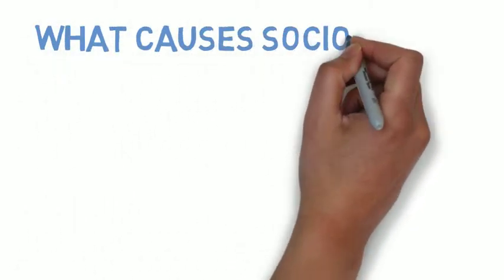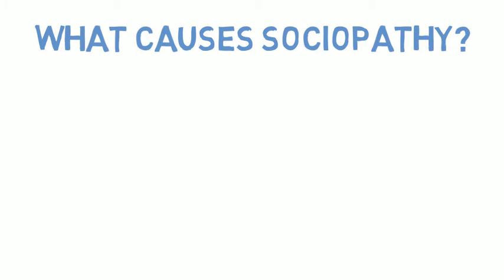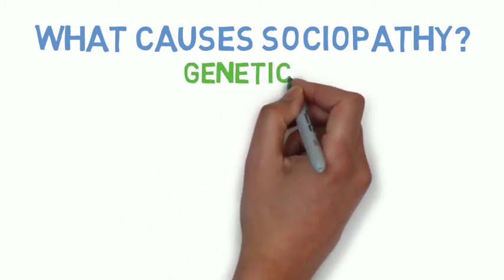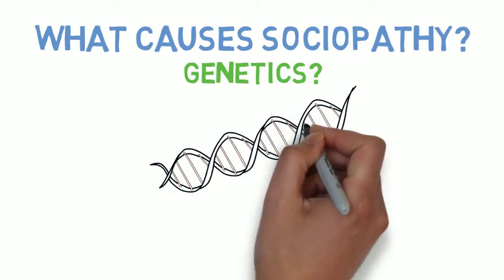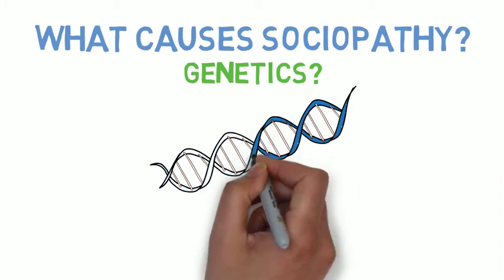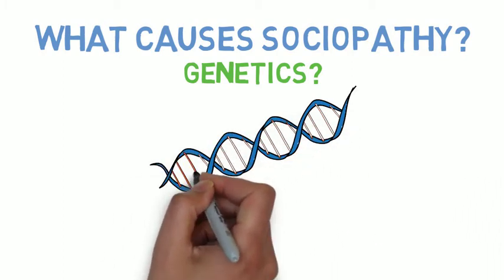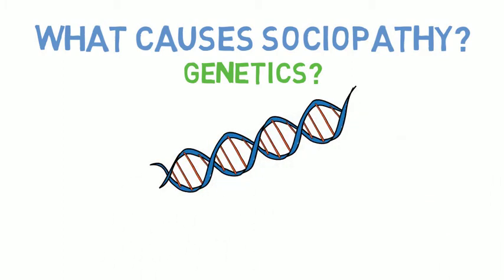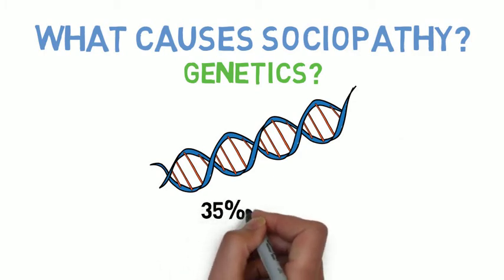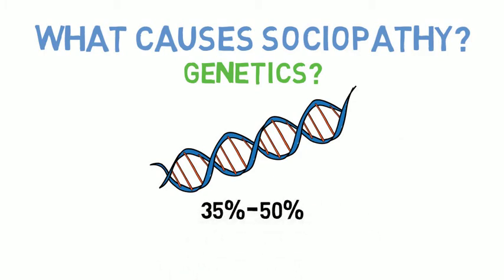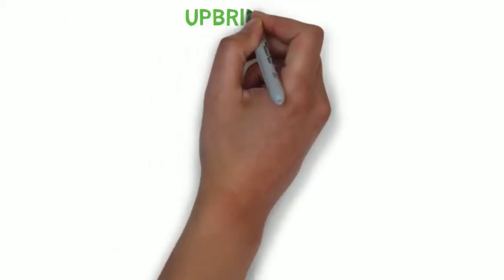And sadly the same holds true for real life, we don't really know what causes sociopathy. Some experts believe that it's passed on genetically, and while that may be partially true, personality traits such as empathy, which of course the sociopath lacks, only has a heritability rating of 35-50% according to several studies. So genetics may play a part in the equation, but at most it's only half the equation.